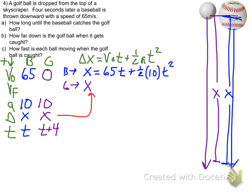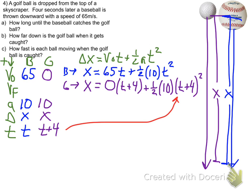Then we do it for the golf ball. We got X. The initial velocity is 0. Time for the golf ball is T plus 4. We have 1 half. The acceleration is 10. And then we have T plus 4 squared.